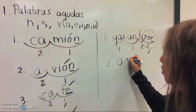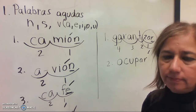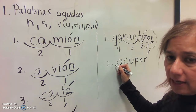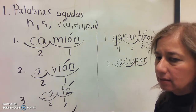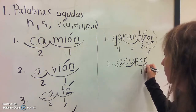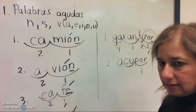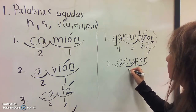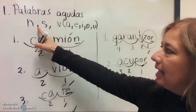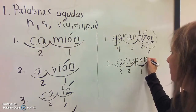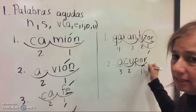Another example: ocupar, meaning 'to occupy.' Let's divide it into syllables: o-cu-par — the stress goes on the last syllable. So it is an aguda. Now we are going to decide — does this word take an accent, yes or no?